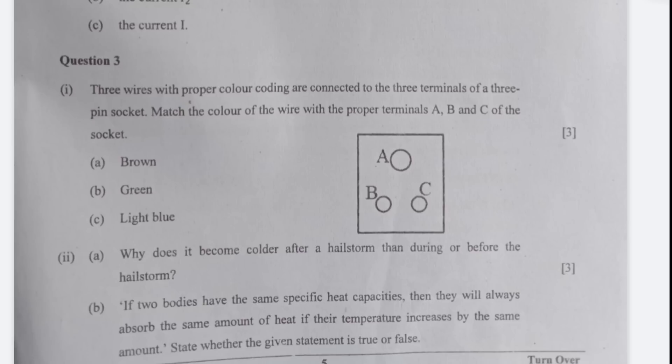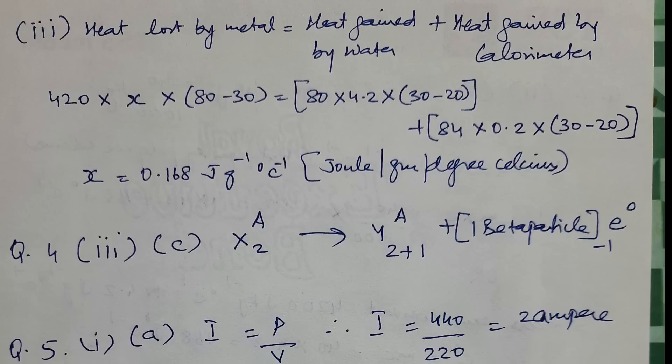The B question, you need to state whether the given statement is true or false. The statement is false as it is not given that they are of the same mass. The third one about a metal piece, this is the way you need to calculate this one. It will come to 0.168 joules per gram per degree celsius.